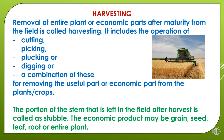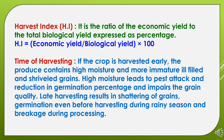The portion of the stem that is left in the field after harvest is called a stubble. The economic parts and products may be grain, seed, leaf, root, or entire plant. Harvest index is one of the important terms related to harvesting. Harvest index is the ratio of the economic yield to the total biological yield, expressed in percentage — that is, harvest index equals economic yield divided by biological yield, multiplied by 100.